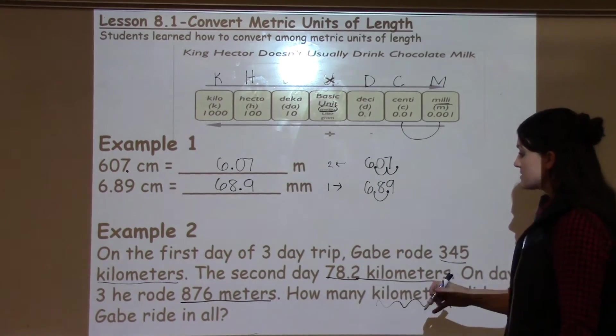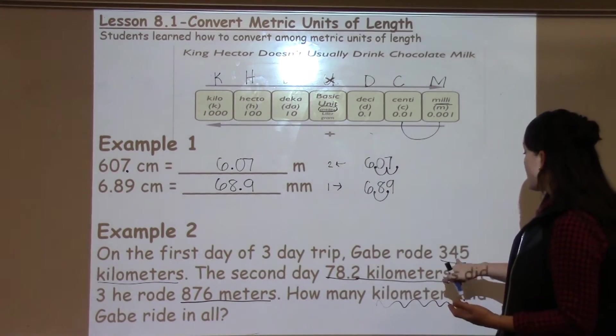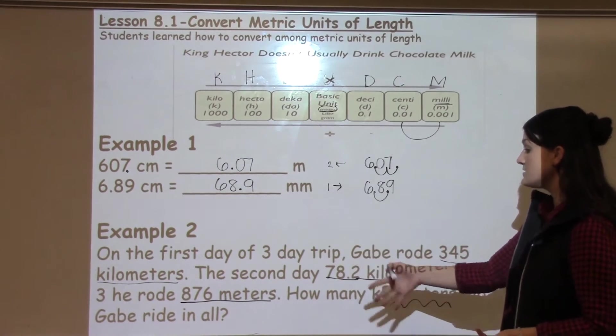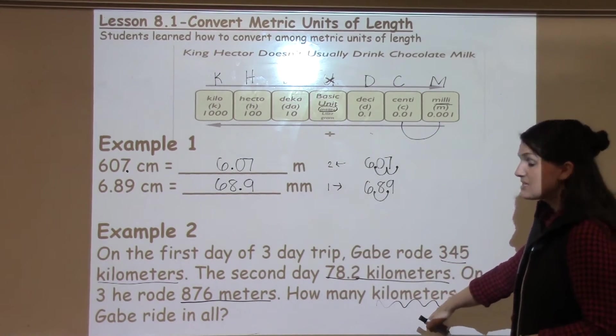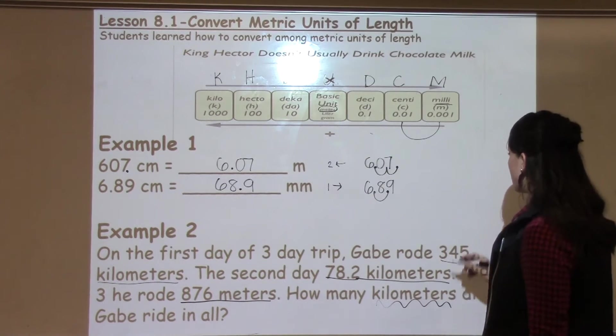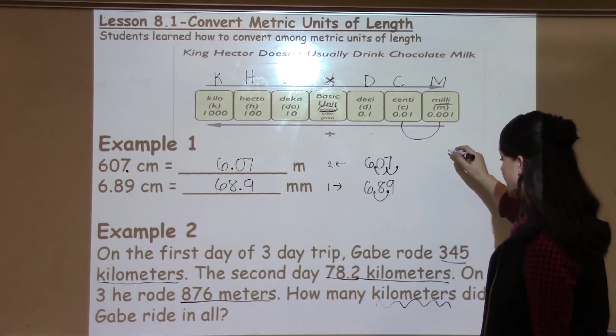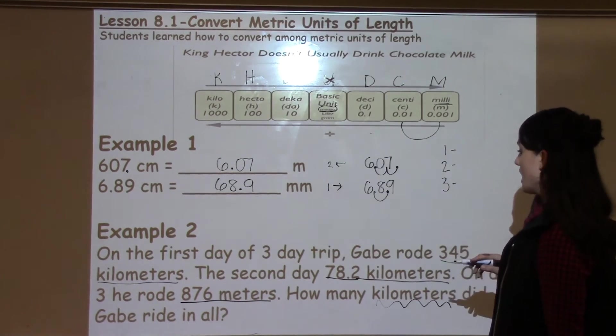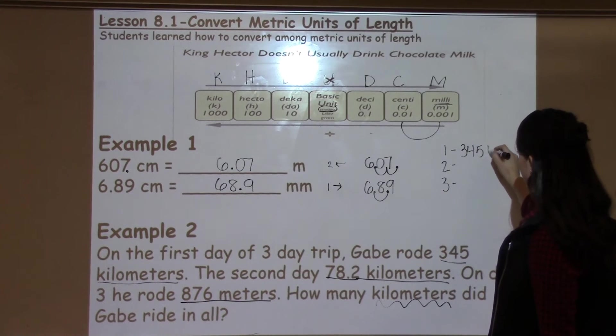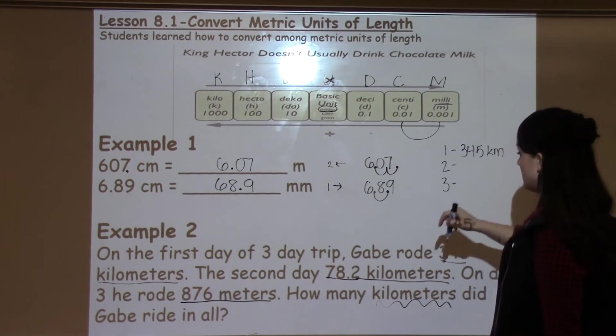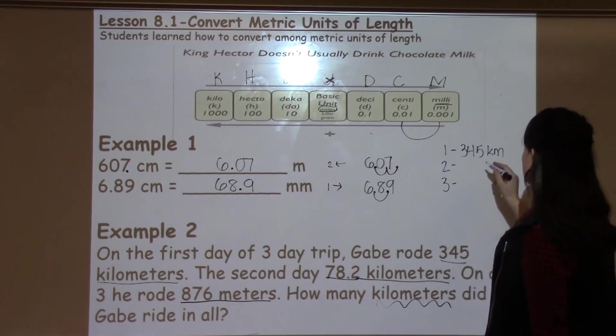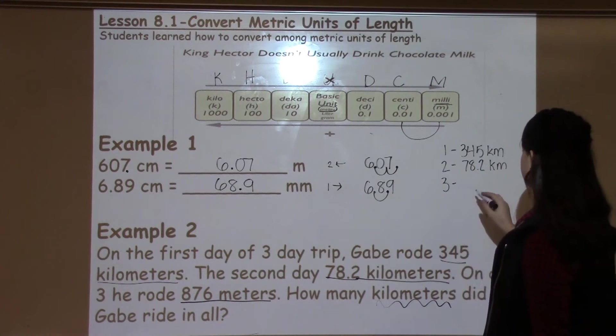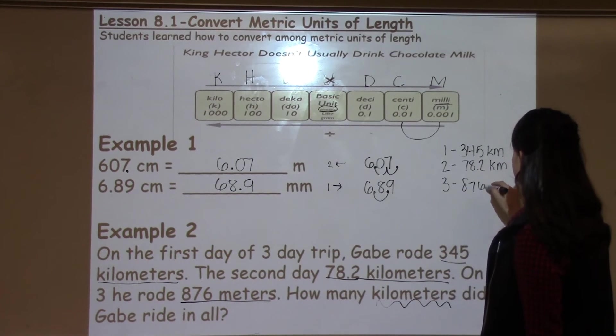So what's really important to notice here is we've got lots of information, but most of my information, two out of the three numbers, are in kilometers. One is in meters. The answer needs to be in kilometers. So I would encourage students to make a quick table and note that I've got one, two, three days. On day one it was 345 kilometers. On day two it was 78.2 kilometers, and on day three it was 876 meters.